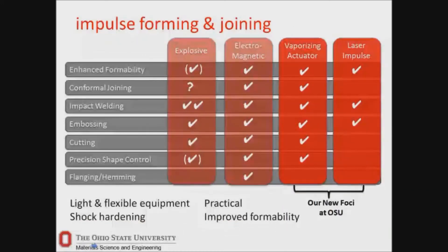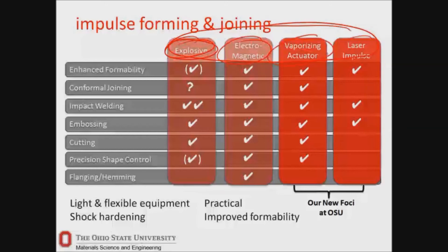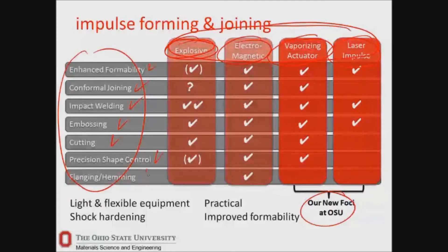This is an overview of what we can do. The methods available for using high speeds include explosives, which have been around for a long time — though we don't use explosives here at Ohio State — electromagnetic forming, the vaporizing foil actuator technique, and laser impulse techniques. The two that are special at Ohio State are laser impulse, which is very close to laser shock peening, and the vaporizing actuator technique. Operations include enhanced formability, conformal joining, impact welding, embossing, cutting, precision shape control, and flanging and hemming. Not all methods apply to all operations, but they all share the ability to improve formability, use lighter equipment, and do operations that are otherwise difficult to impossible.